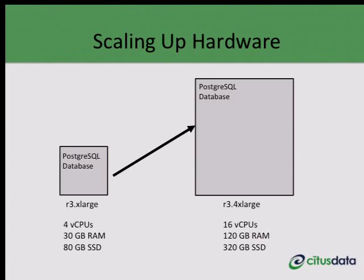What are the ways to scale your hardware? The first way is known as vertical scaling. In this approach, we simply go and buy a bigger machine. In this example, we have a PostgreSQL machine that has four CPUs, 30 gigs of RAM, 80 gigs of local storage. We went and bought a machine that had four times the resources, or provisioned one on AWS, and simply migrated our PostgreSQL database to that bigger machine. This approach is the simplest form of scaling your hardware resources, and we recommend that you leverage it.